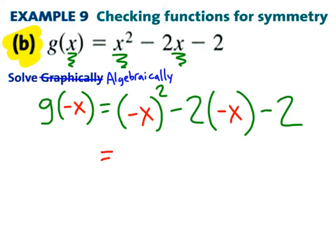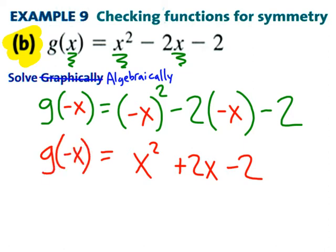Again, if I simplify just like last time, if you have a negative X in parentheses squared, that will give us the same thing as just X squared. In this next term, the two negative signs cancel, and I get positive 2X minus 2. That's what G of negative X equals.